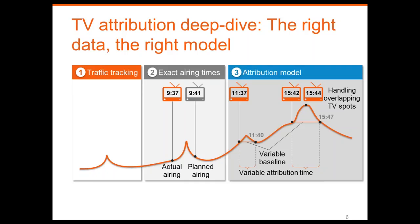We also need a variable attribution time. When you have the beginning of a commercial break, people are still bored and distracted — they want to kill some time. But at the end of a commercial break, users are not keen to visit websites because the TV show they were watching is back on the air. So we have this variable attribution time that we need to consider.